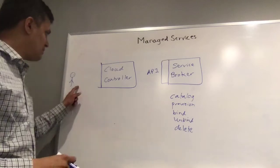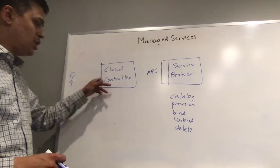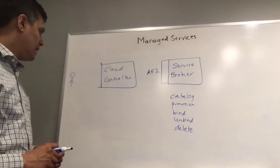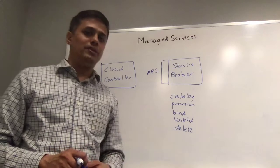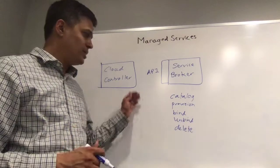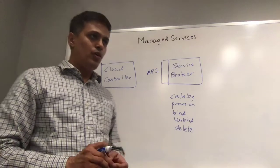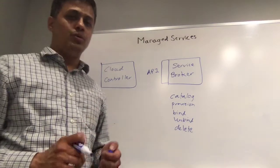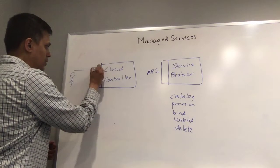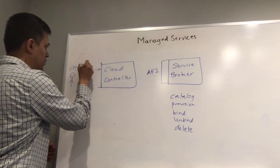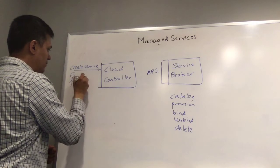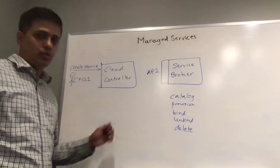The developer uses the CF CLI tool, which talks to the REST endpoint of the cloud controller. Typically, the developer will issue the cf marketplace command to find out the variety of services that the PCF deployment has and all their service plans. Once the decision is made to use a particular service plan, the developer will issue the create service command using CF CLI on the cloud controller.